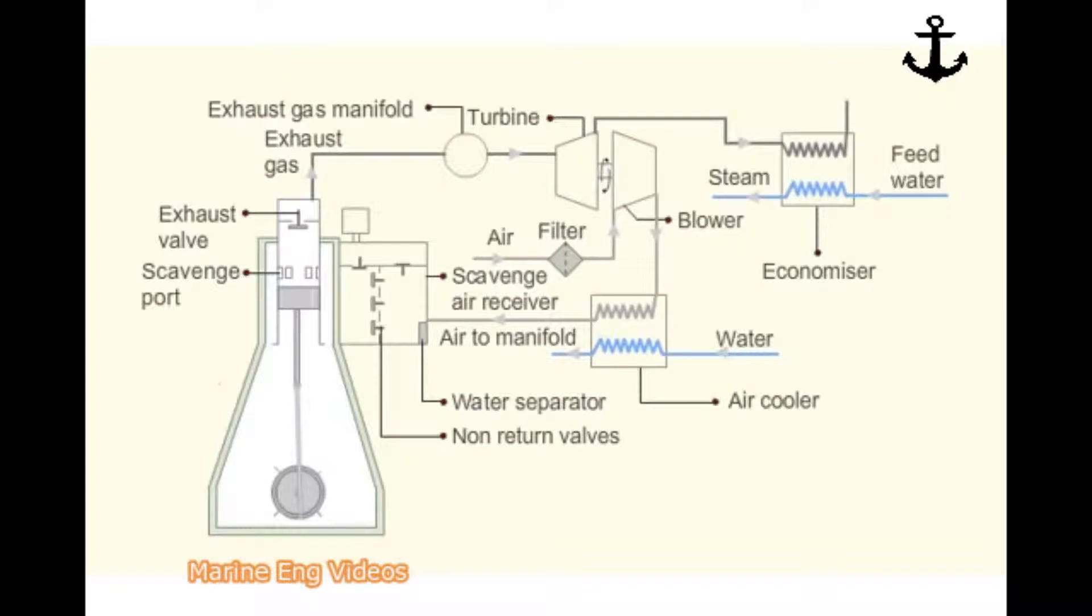An electric motor drives the auxiliary blower. During maneuvering, auxiliary blower draws air from the outer compartment and delivers to the inner compartment via another set of non-return valves.